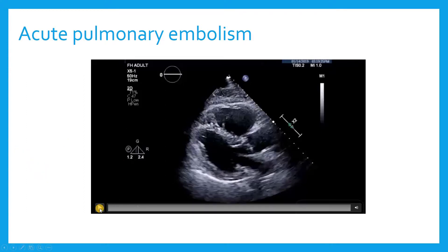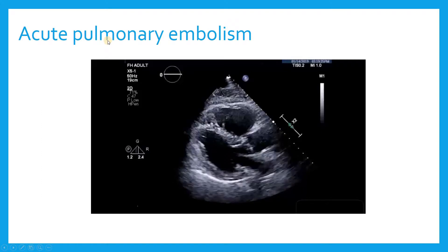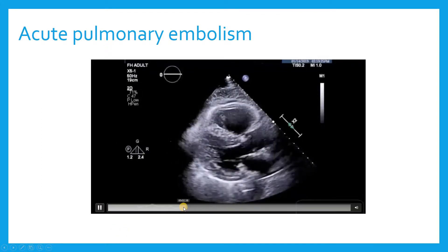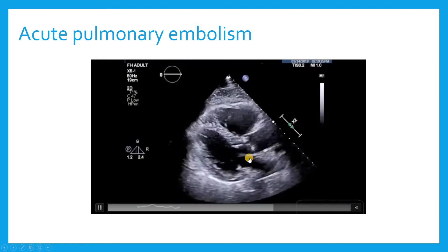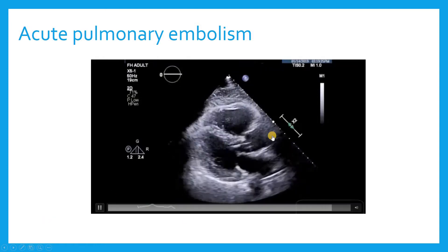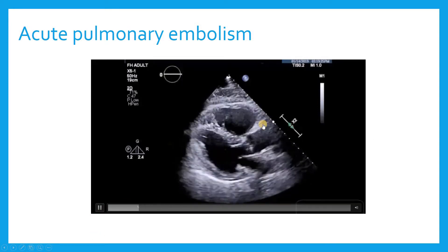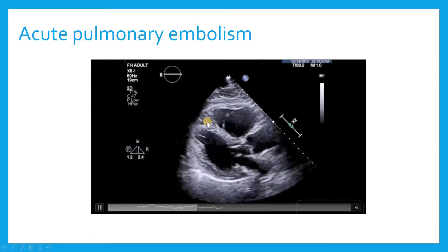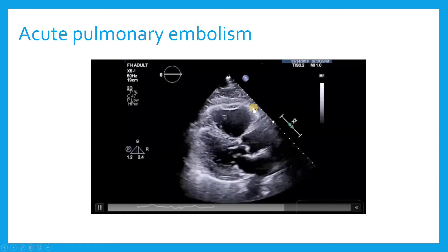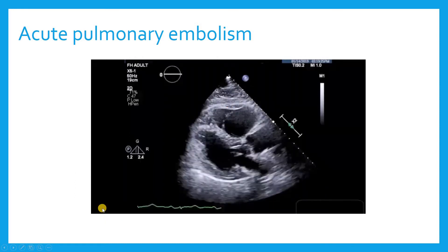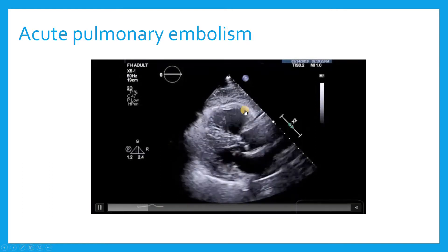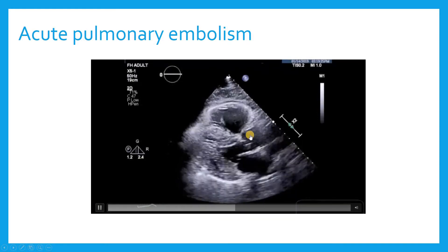Let's talk about how we use echo to monitor critically ill patients with acute pulmonary embolism. Echo is probably not routinely justified in managing and prognosticating acute PE, but for critically ill patients that end up in our ICU, it can be a helpful adjunct for prognosis and management. This is an apical four-chamber view showing McConnell sign: the right ventricular apex is contracting a little bit, but the anterior free wall is completely akinetic — not moving at all.